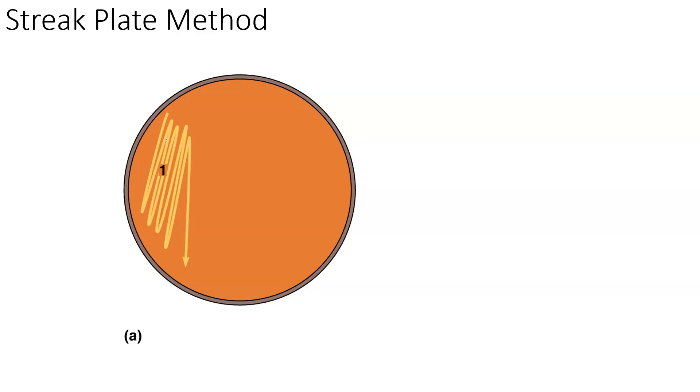Ultimately you need to take your loop and you need to streak it along this path in one quadrant of this plate. Now if you divided this plate into four quadrants you can see that primarily we're working in the first quadrant with our most concentrated solution, our most concentrated sample.